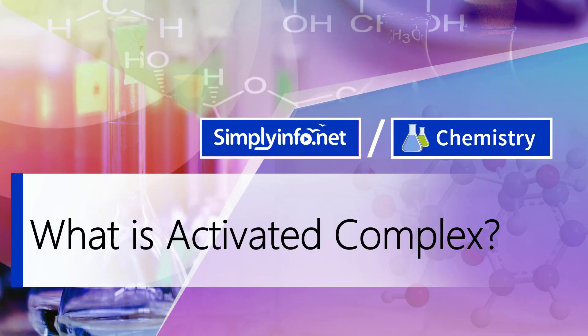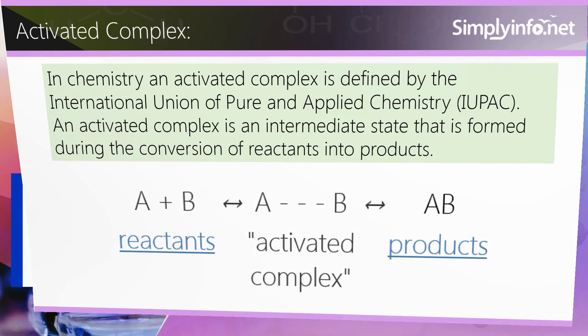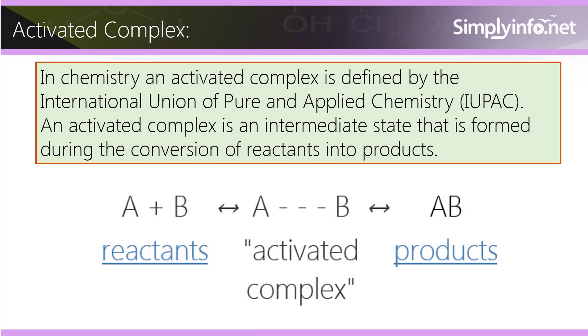What is Activated Complex? In chemistry, an activated complex is defined by the International Union of Pure and Applied Chemistry. An activated complex is an intermediate state that is formed during the conversion of reactants into products, A plus B reversible action AB.